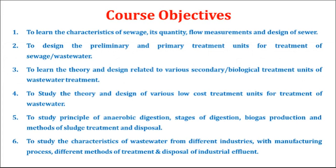The course objectives of Environmental Engineering 2 are: First, to learn the characteristics of sewage, its quantity, flow measurement, and design of sewer. Second, to design the preliminary and primary treatment units for treatment of sewage or wastewater. Third, to learn the theory and design related to various secondary or biological treatment units. Fourth, to study the theory and design of various low-cost treatment units. Fifth, to study principles of anaerobic digestion, stages of digestion, biogas production, and methods of sludge treatment and disposal. The last objective is to study the characteristics of wastewater from different industries with manufacturing processes, different methods of treatment, and disposal of industrial effluent.